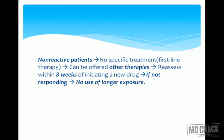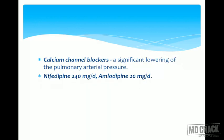Alternative therapies include sildenafil, bosentan, and prostaglandin therapies. Treatment should be reassessed within eight weeks. If the patient is not responding to sildenafil after eight weeks, there is no point continuing — stop the drug and try an alternative.